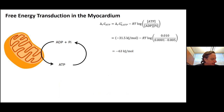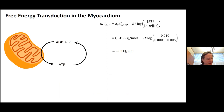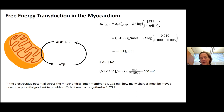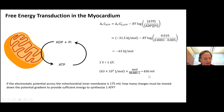In a battery we measure electrical potential in volts — a volt is a joule per coulomb. How many volts is 63 kilojoules per mole? We use Faraday's constant as a unit converter: there are about 96,000 coulombs in one mole. So 63 kilojoules per mole is about 650 millivolts.